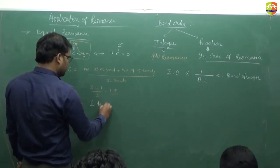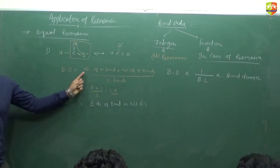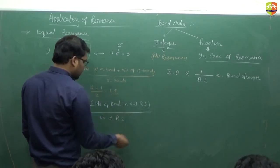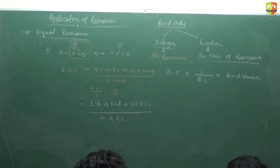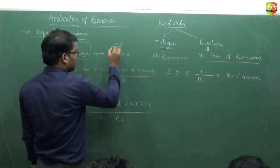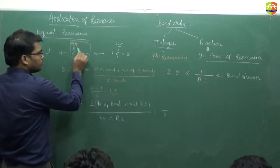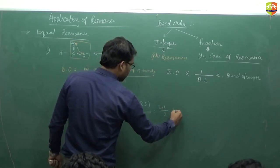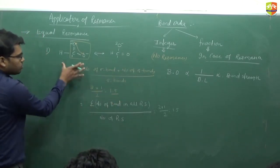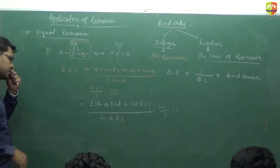There is also a second formula: the summation of number of bonds in all resonating structures divided by the number of resonating structures. For example, to find the bond order of a carbon-oxygen bond, you count how many RS we have — 2 — and how many bonds that specific C-O bond has in each RS: 2 bonds in one, 1 bond in the other. So 2 plus 1 divided by 2 equals 1.5. The advantage of the first formula is you don't need to draw all the resonating structures.